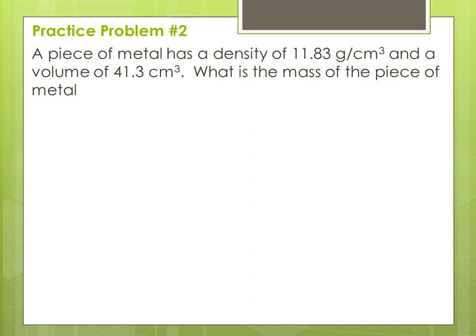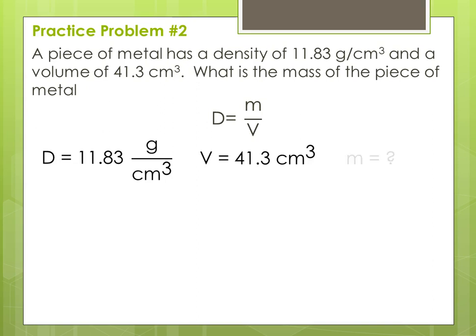Next practice problem. A piece of metal has a density of 11.83 grams per centimeter cubed and a volume of 41.3 centimeters cubed. What is the mass? Density is mass per unit volume. Identify the variables: density is given, volume is given, and our unknown is mass — that's what we're solving for. We need to rearrange the equation. Multiplying both sides by volume gets mass alone on one side of the equal sign, so mass equals density times volume.